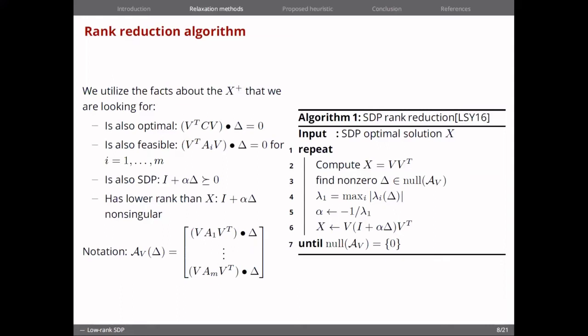And what we're doing in the algorithm is decrease rank in each iteration by means of this step direction delta and step length alpha that we compute in this way by looking at the null space of the set of equality constraints. And we don't get too much into it, but the idea here is that if a lower rank solution exists, we can in many cases converge to it by means of this algorithm.